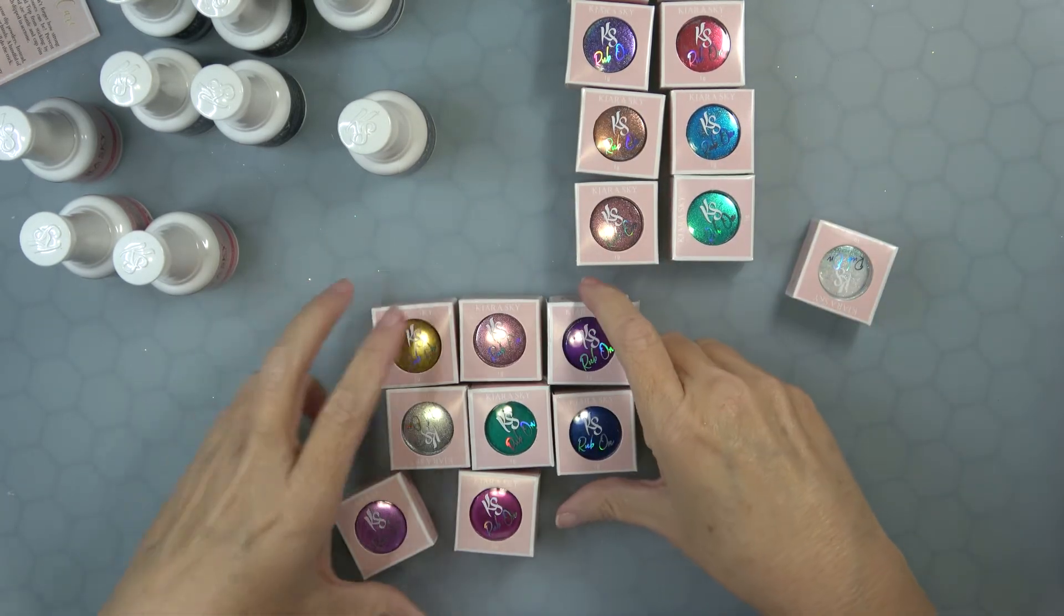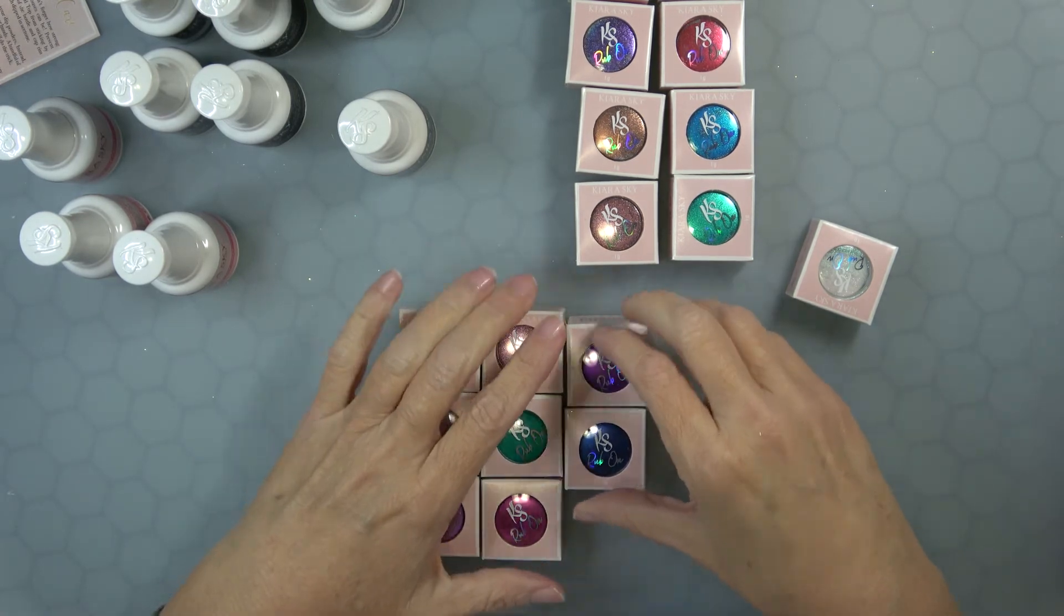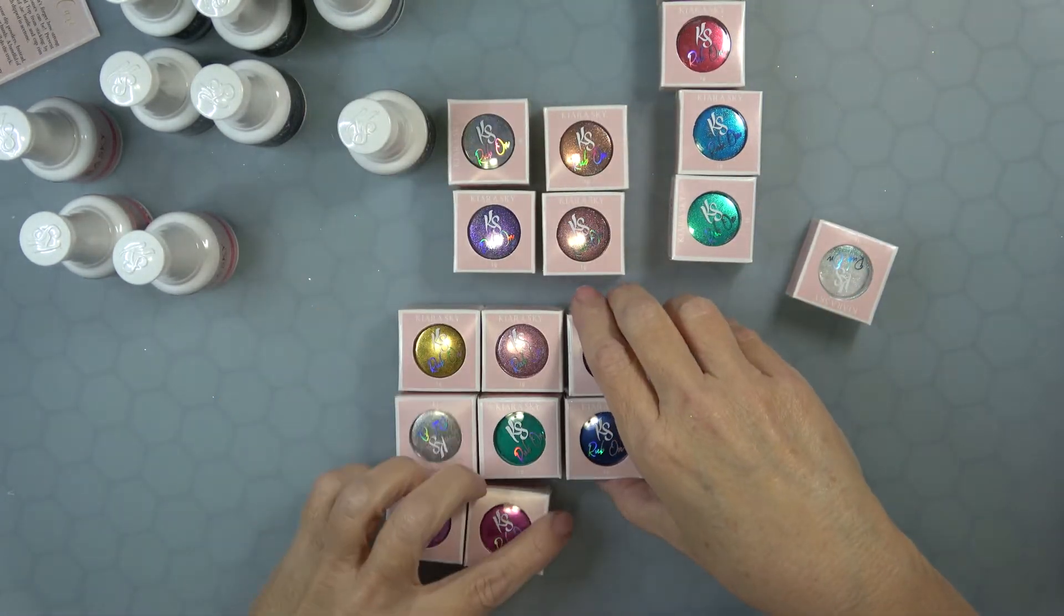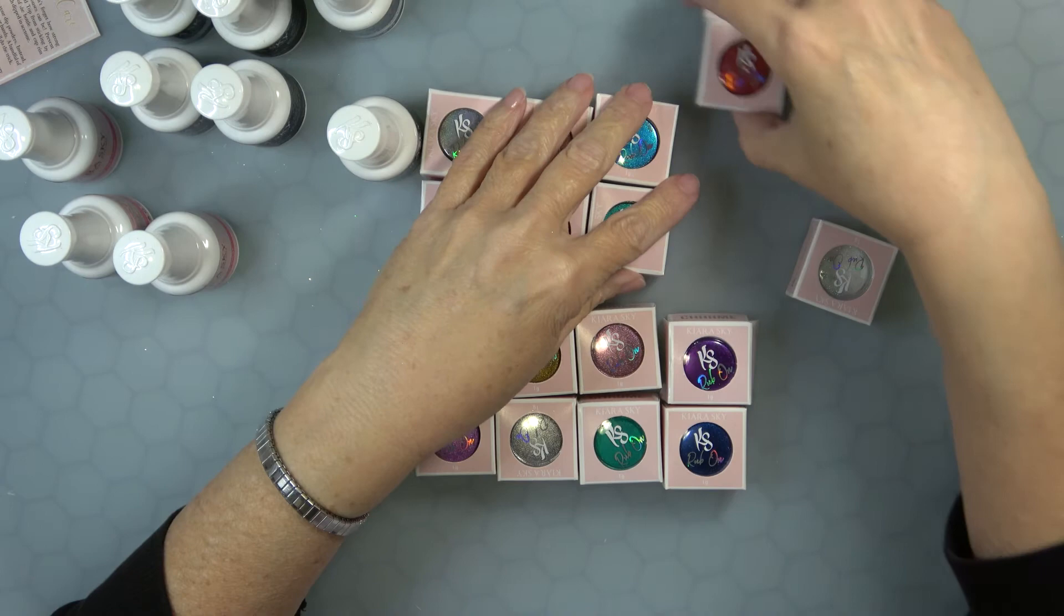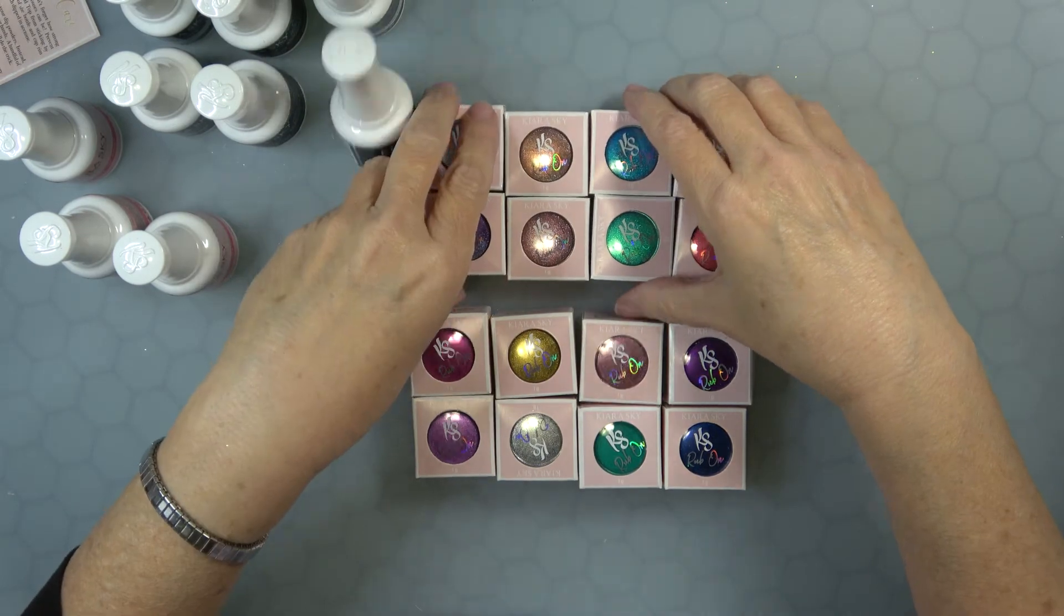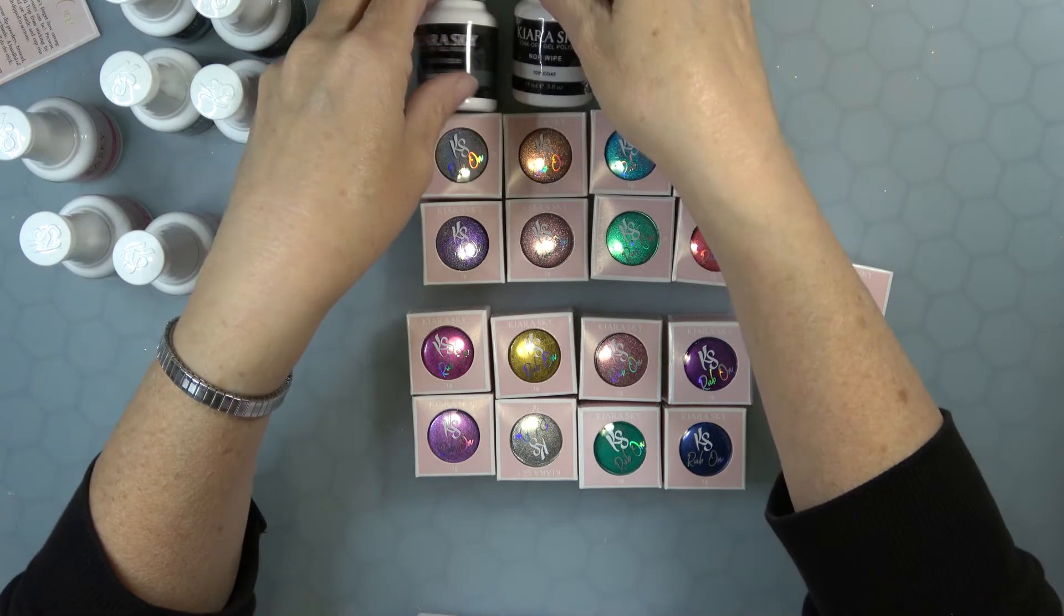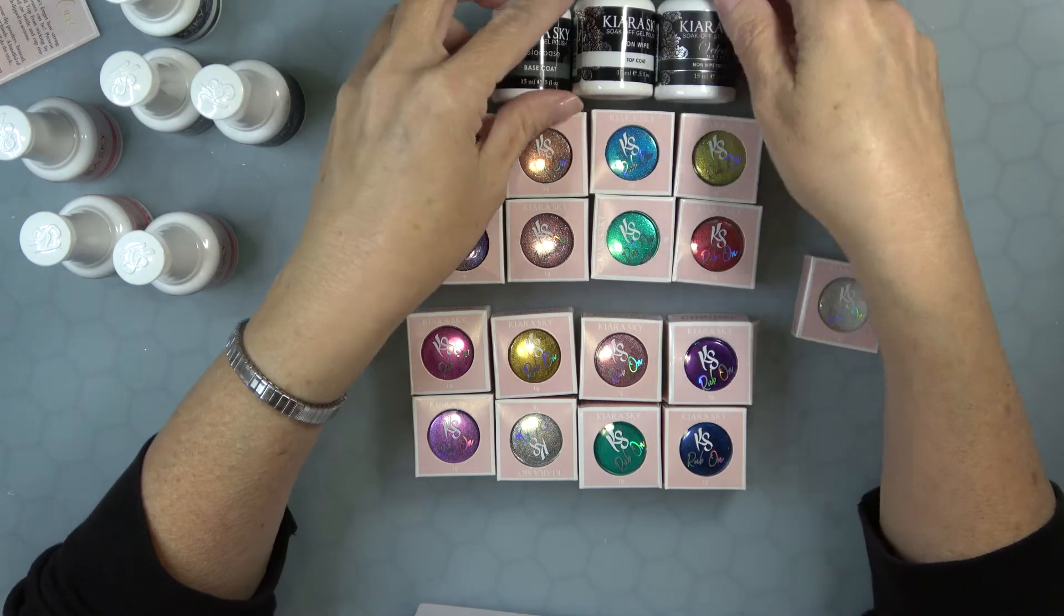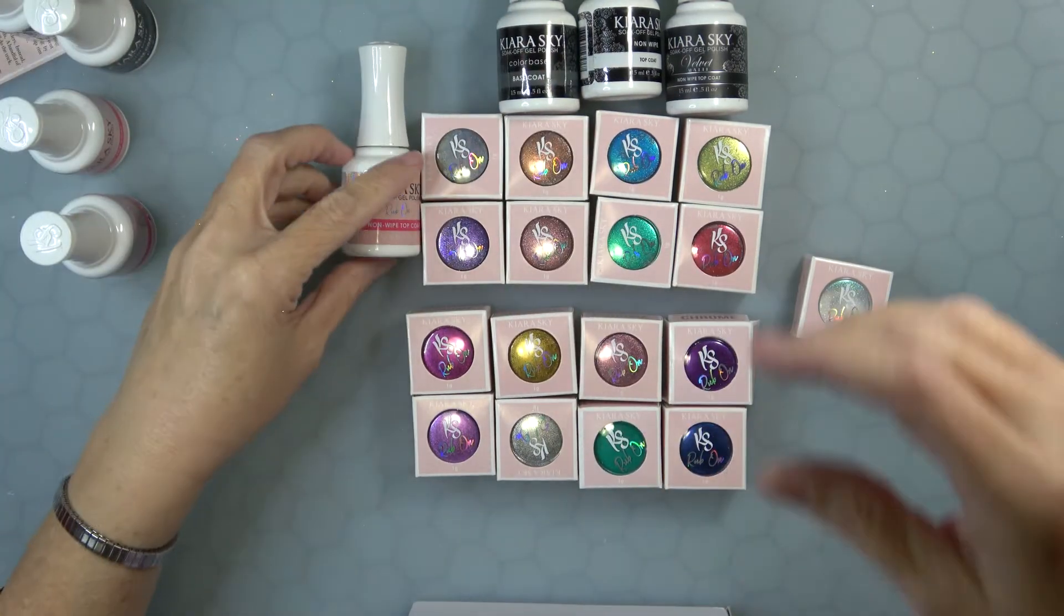So I have eight chromes, eight hollows, and one mermaid powder. This is their full whole line of rub-on. I also have a couple of bottles of base coat for the regular gel polish, no-wipe top coat, velvet matte, as well as the rub-on no-wipe top coats. Look at that, that's amazing.